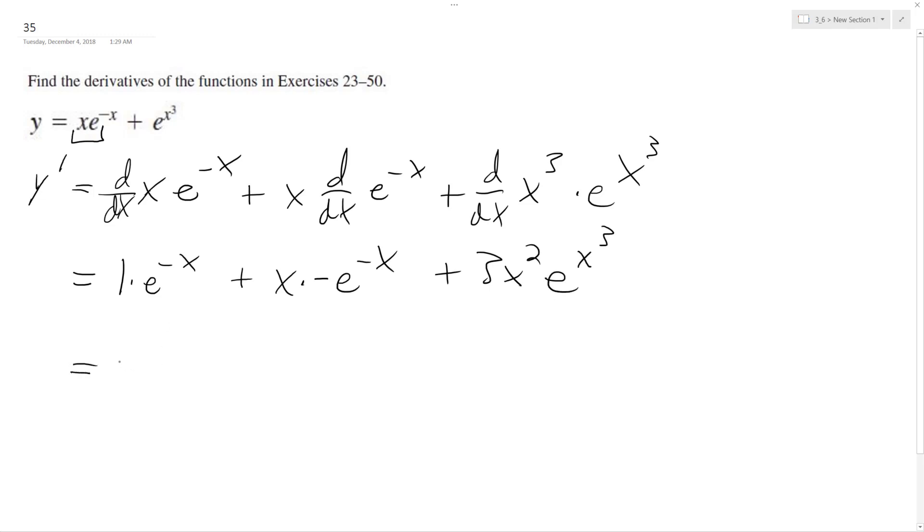So this all becomes e raised to the negative x minus, because I brought this negative out, x e raised to the negative x plus 3x squared e raised to the x cubed.